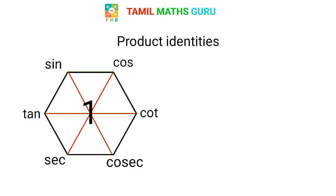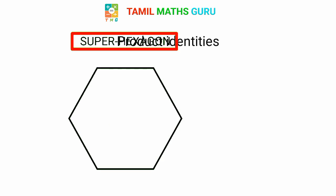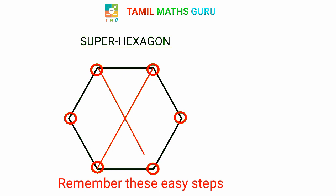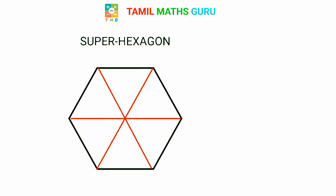How do we use the super hexagon? How do we use these points? We use a hexagon with six vertices and three diagonals.